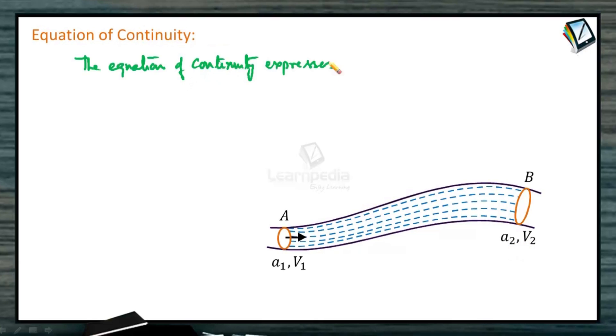The equation of continuity expresses the law of conservation of mass in fluid dynamics. A1V1 is equal to A2V2. In general, A times V should be constant.